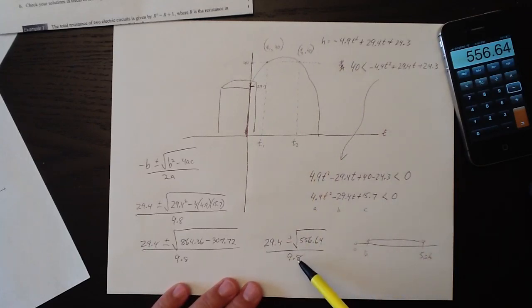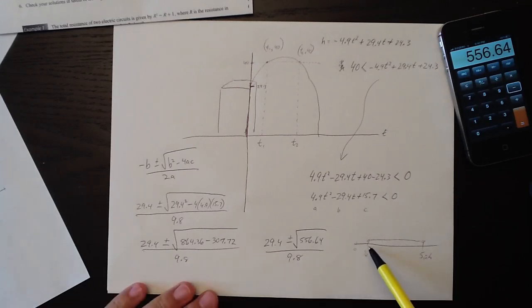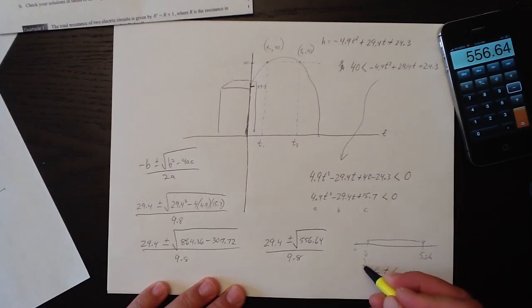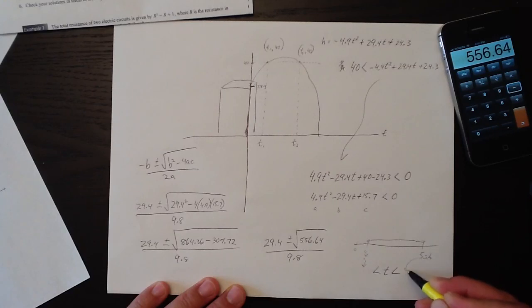So if we can figure this out, if we have a proper calculator that calculates square roots and we can figure this out, then we can figure out the values on the number line and we know that it's the space in between. So we'll say that t is going to be greater than something and less than something, whatever this number is there, whatever that number is there.